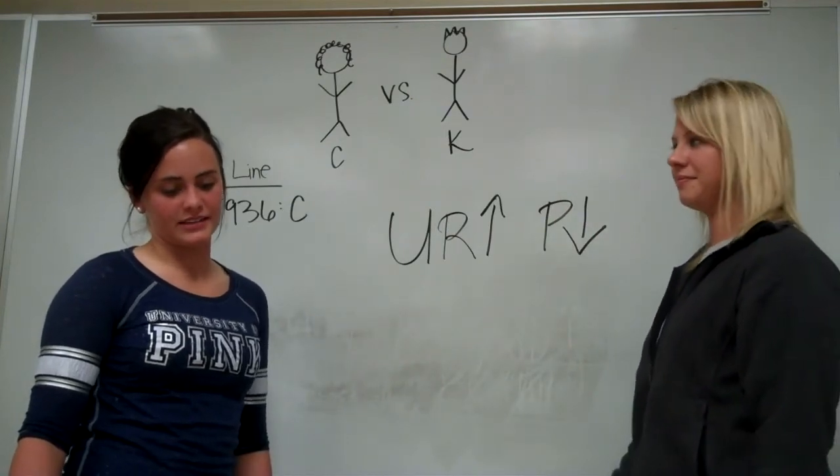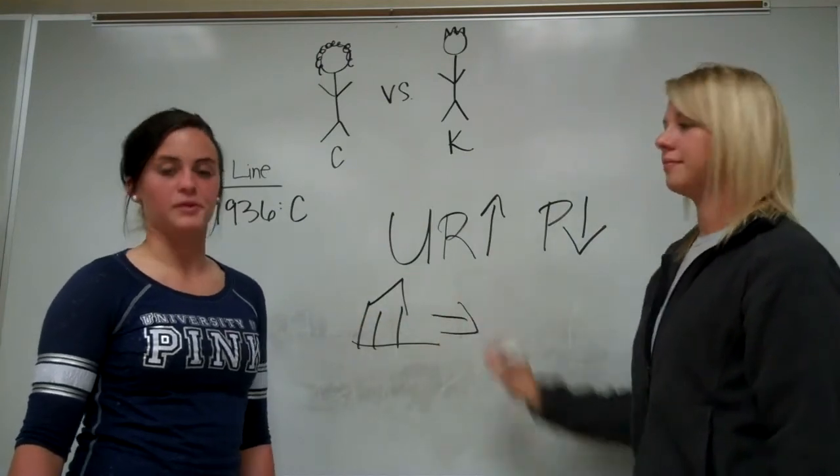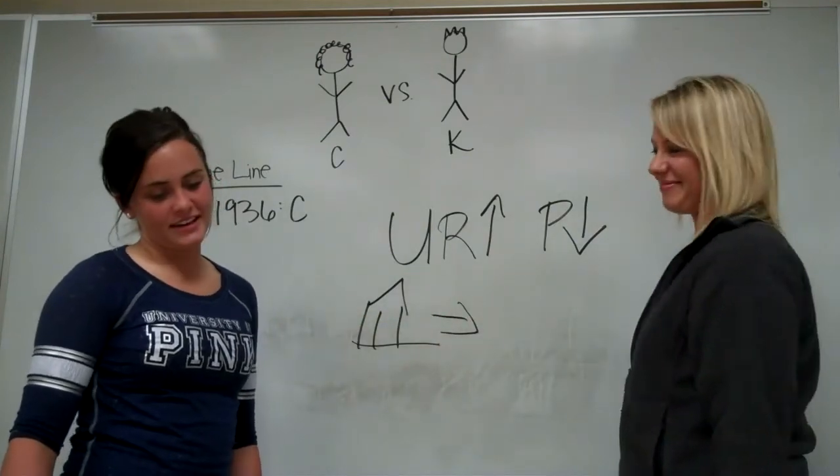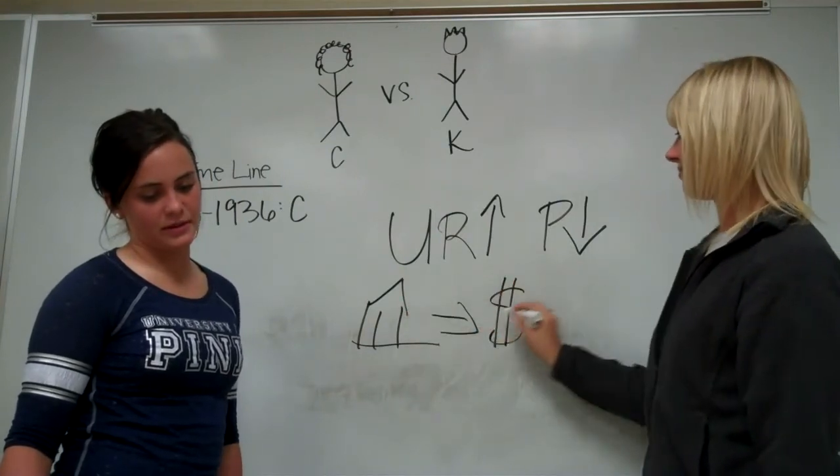This is when John Keynes stepped in and began addressing short-term issues. He believed the economy would not self-regulate during the Depression, so the government needed to interfere to help stabilize and bring the economy back up.